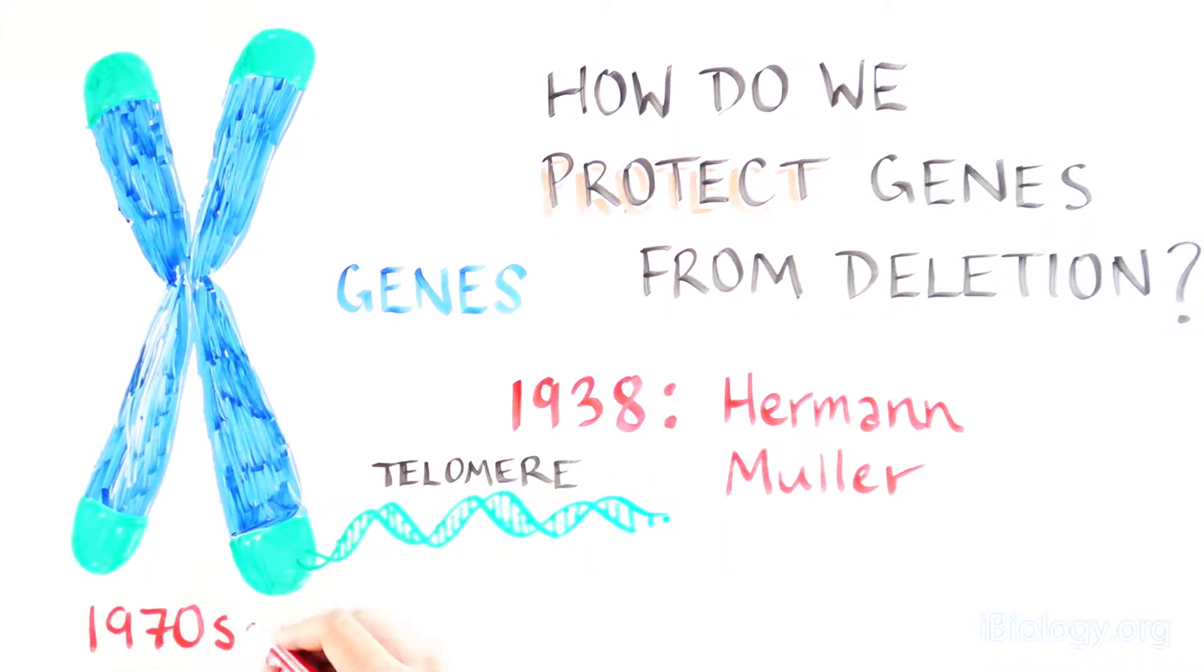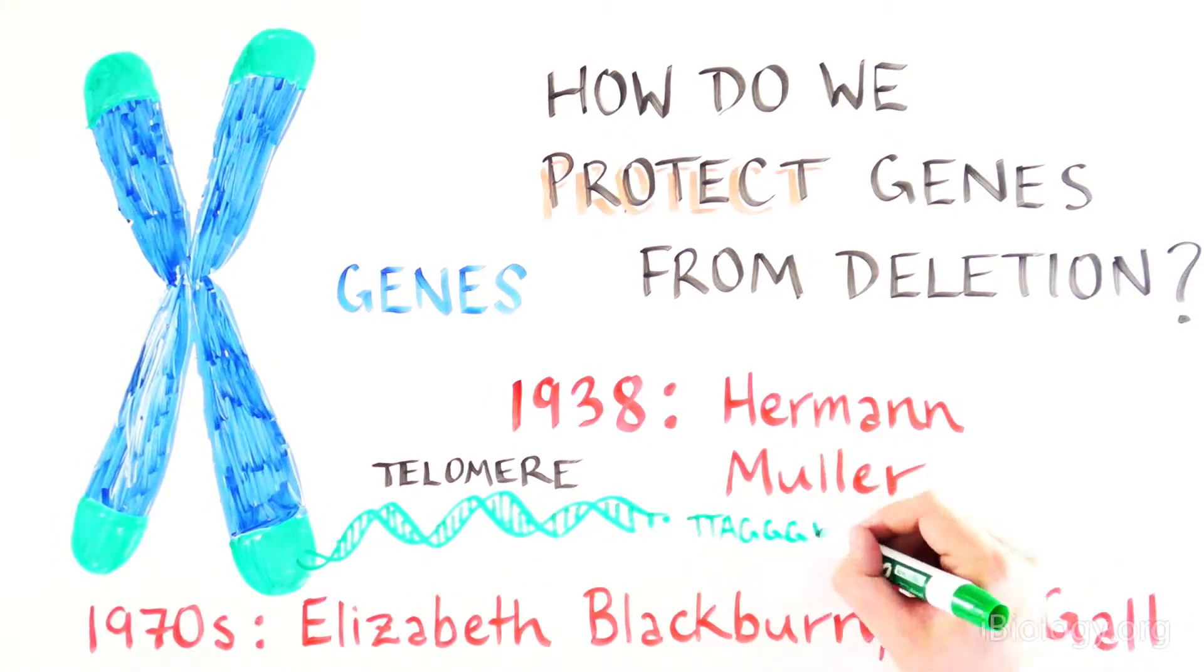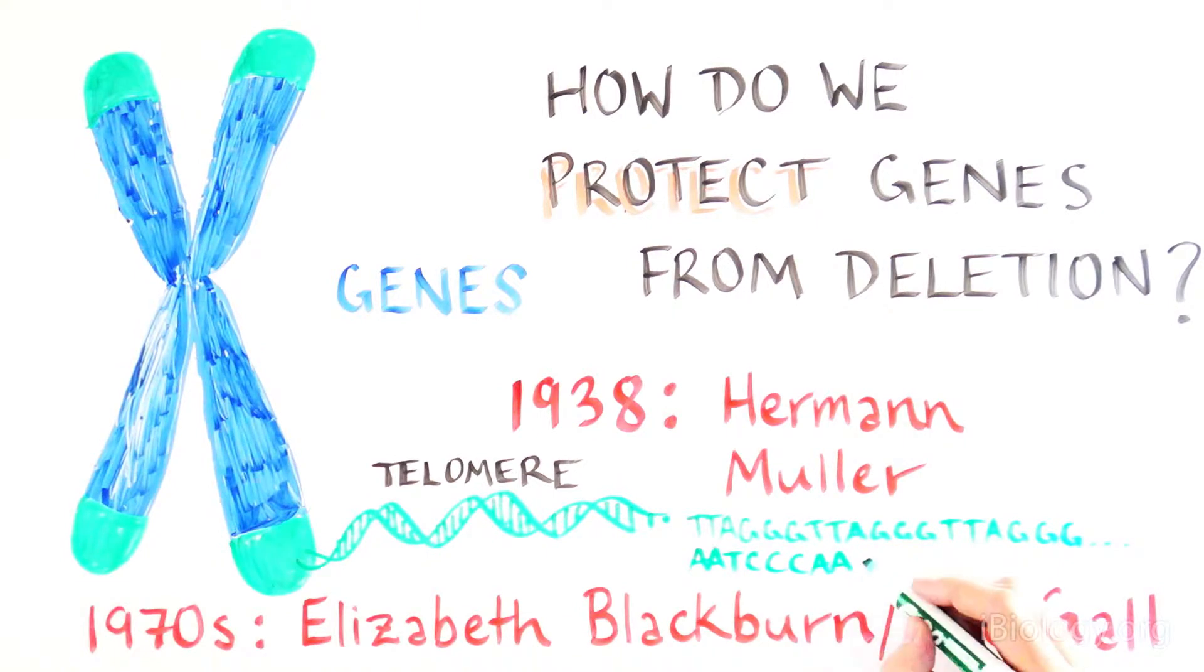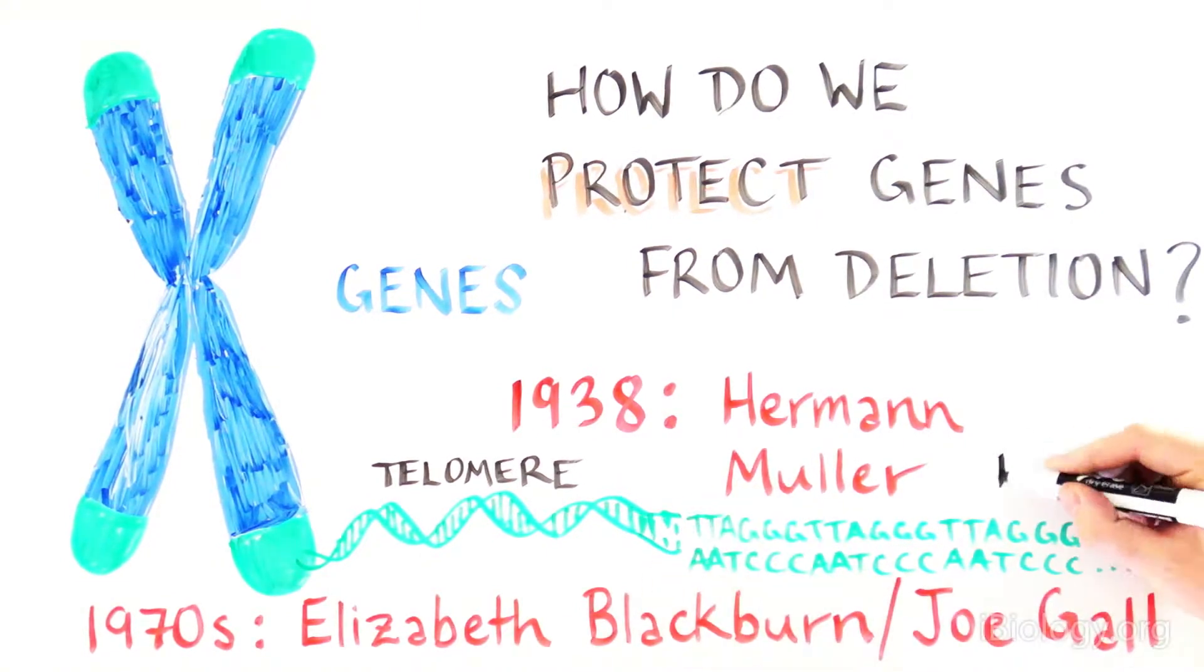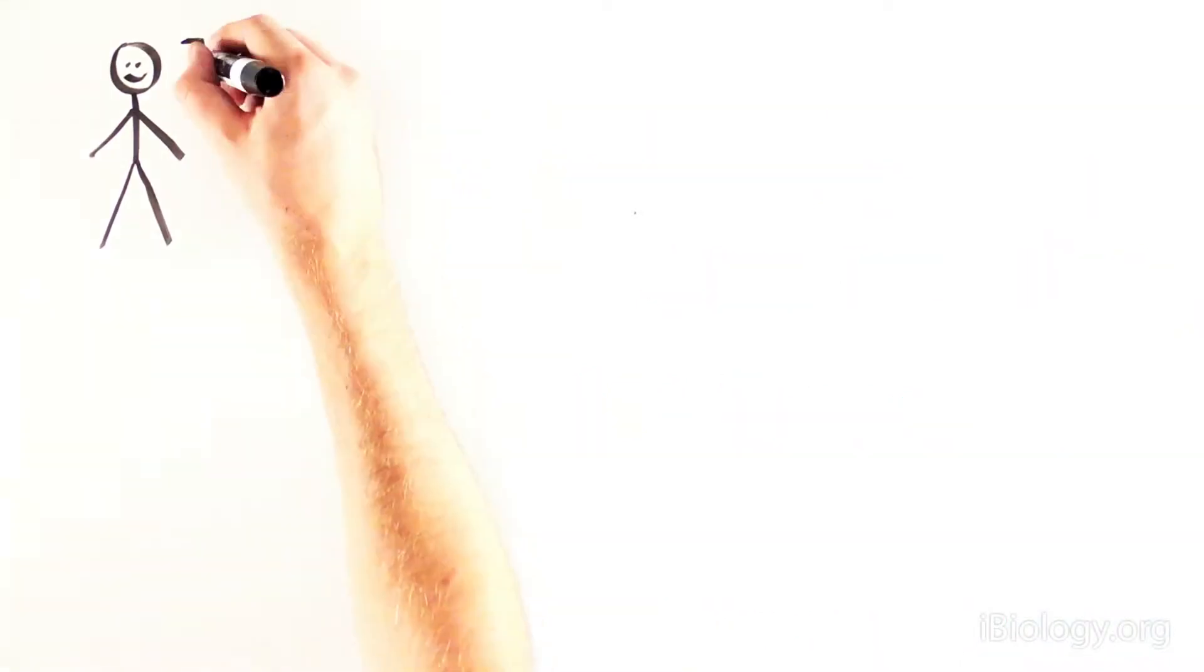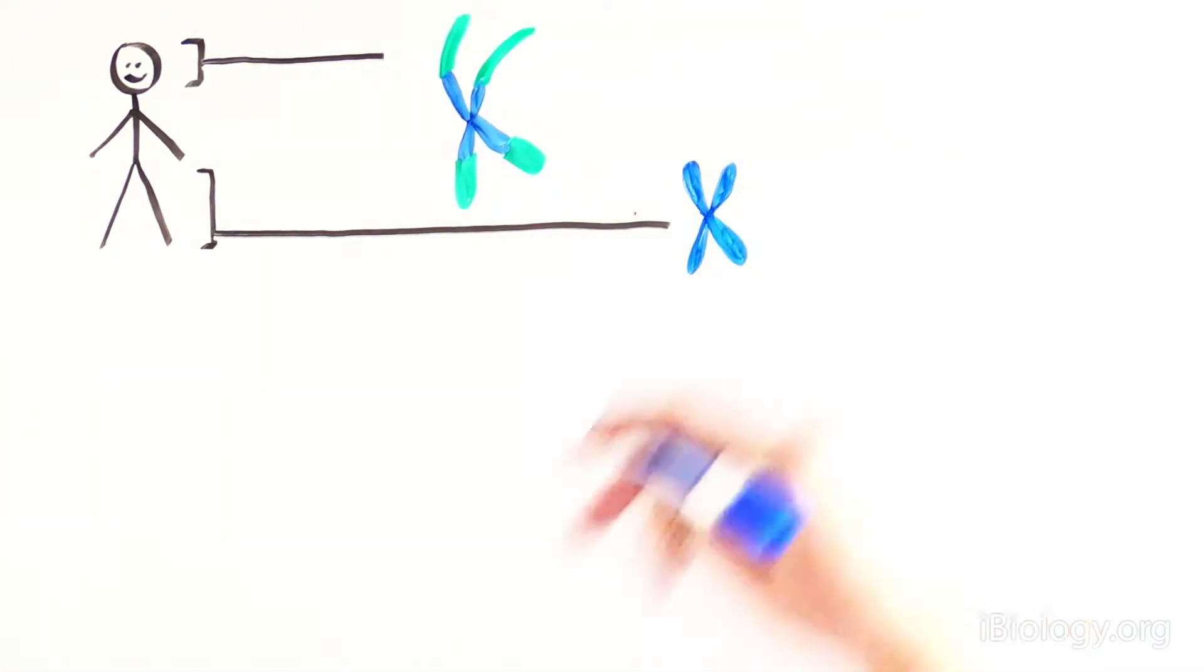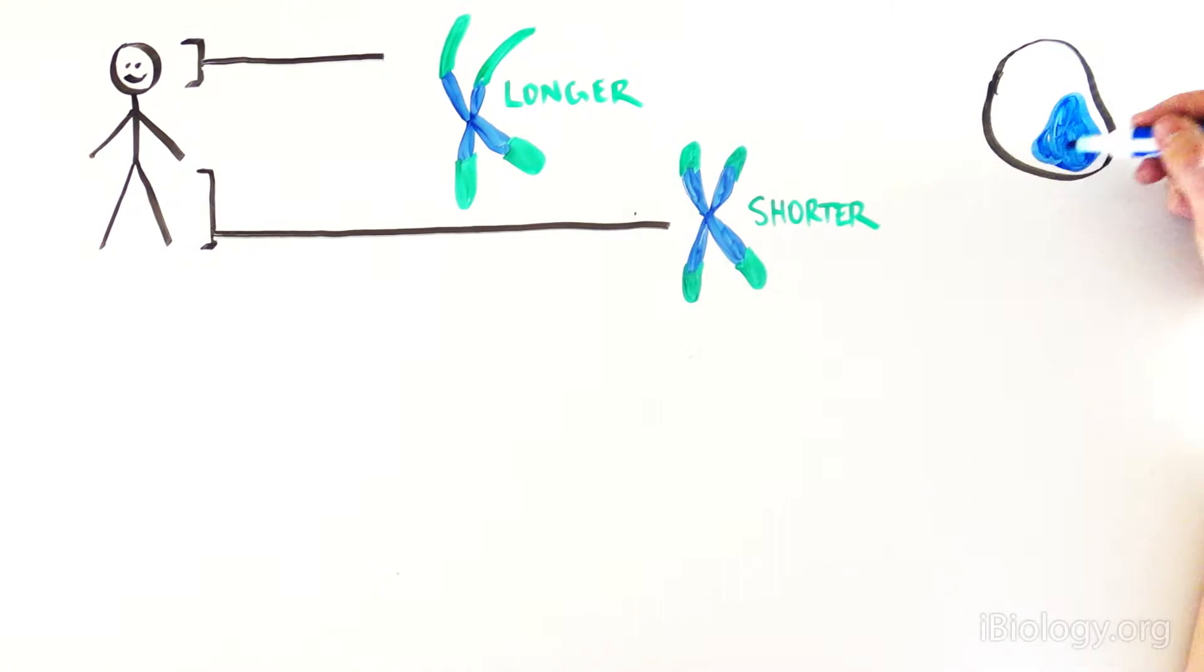In the 1970s, Elizabeth Blackburn and Joseph Gall discovered that all telomeres consisted of a very specific DNA sequence made up of thousands of repeats of the same nucleotides, TTA-GGG, in yeast, mammals, etc. But what was also curious was that the telomeres differed in length within one individual and even within one cell.